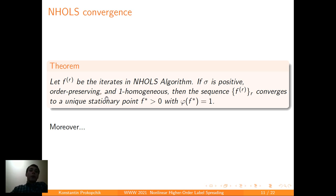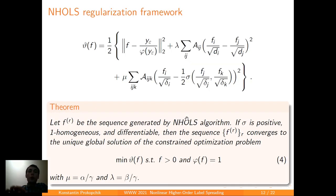Now we move on to our theory. Let f be the iterates in NHLS Algorithm. If sigma is positive, order-preserving, and 1-homogeneous, I recall that sigma is a mixing function, then the sequence converges to the unique stationary point f star that is positive, and the norm phi is equal to 1.